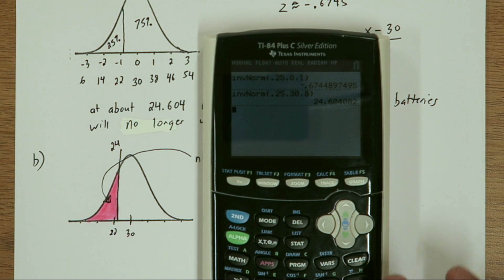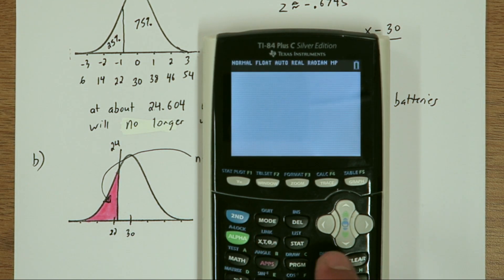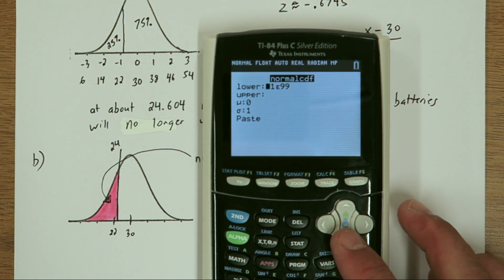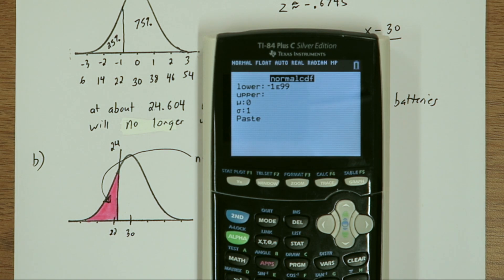To access that on the calculator, press second, then vars. Go to normal CDF. Lower limit, you can just leave it right there or type negative 9999. Our upper limit again is going to be 24. Our mean is 30 and our standard deviation is 8.